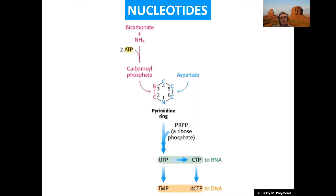From PRPP you make UMP, then UTP, then CTP. With the two hydroxyl groups present, those go straight to RNA. But you need to reduce the 2'-hydroxyl group in order to make dTMP and dCTP. dTMP needs a further methylation to go from U to T. We'll see all this in a little more detail.